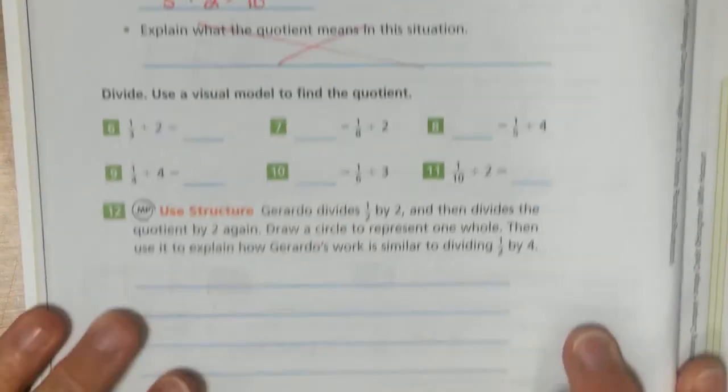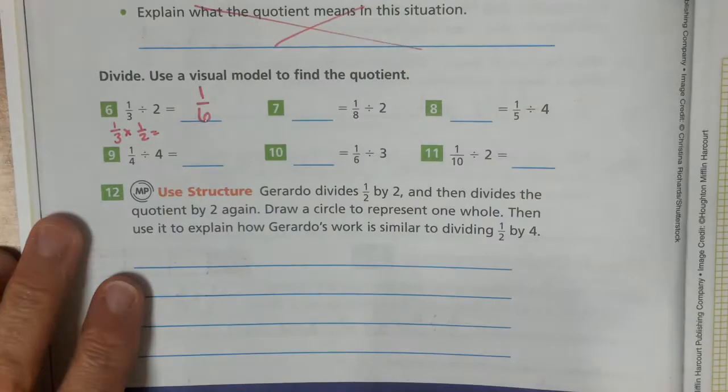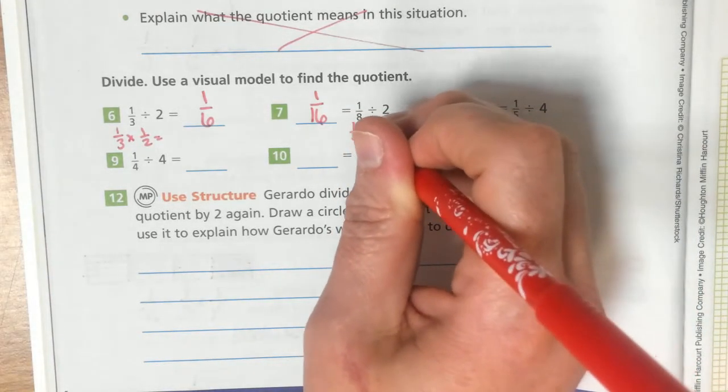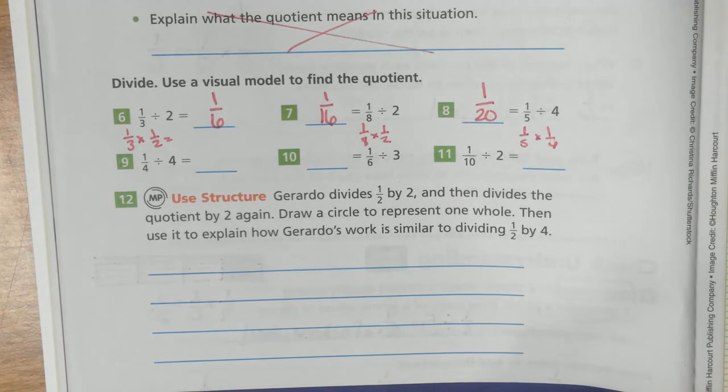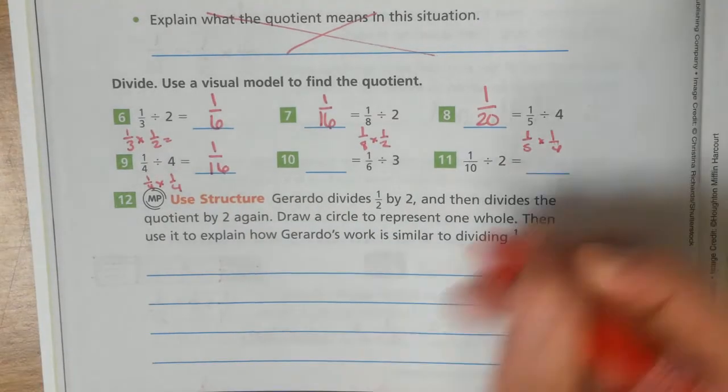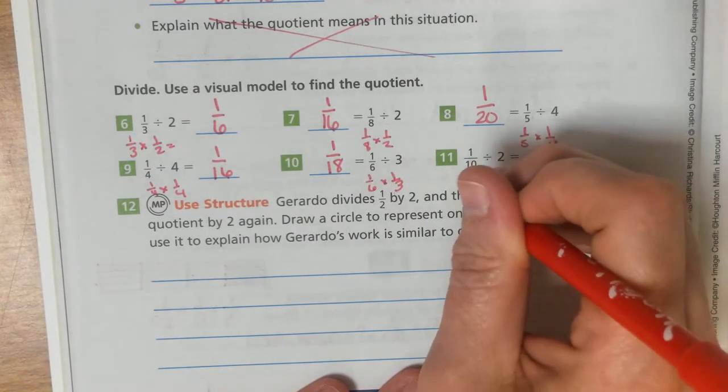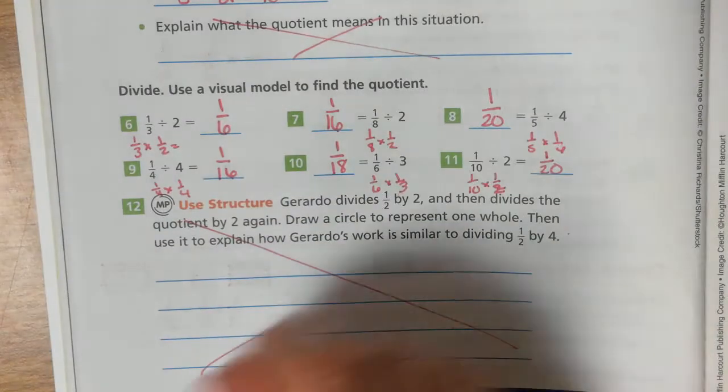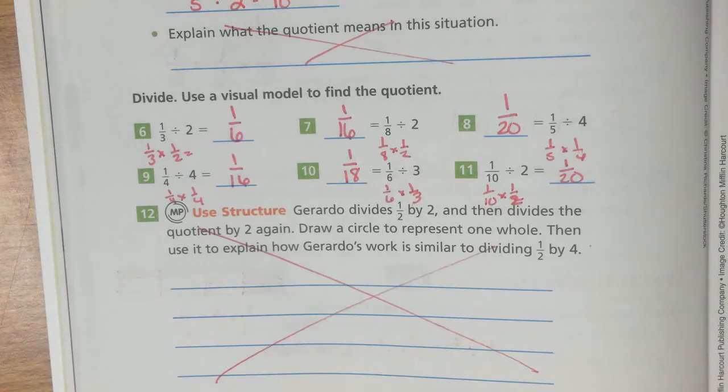Use a visual model to find the quotient, or we could just divide. If I take this one third times one half equals one sixth. This one would be one sixteenth. You take your one eighth times your one half. One fifth times your one fourth, one twentieth. One fourth times one fourth, one sixteenth. One sixth times one third, one eighteenth. One tenth times one half, one twentieth. Basically just take that whole number, make it, reverse it, do the inverse, and then you're able to solve that problem.